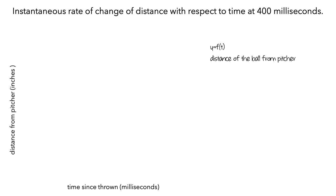If we were able to know the position of the ball at any moment, we might get a graph that looks something like this. At 400 milliseconds, the ball was 726 inches from the pitcher.